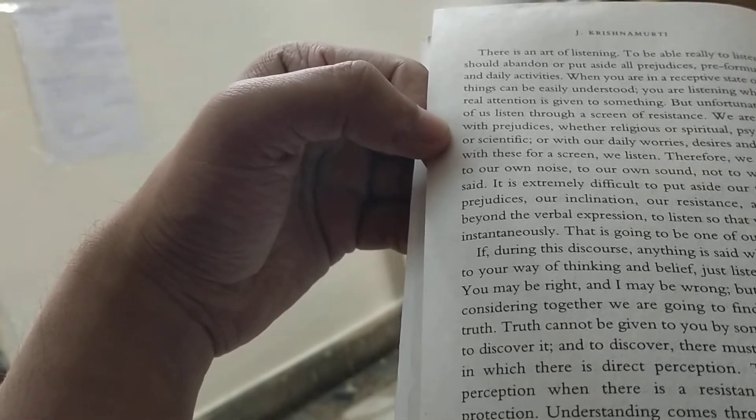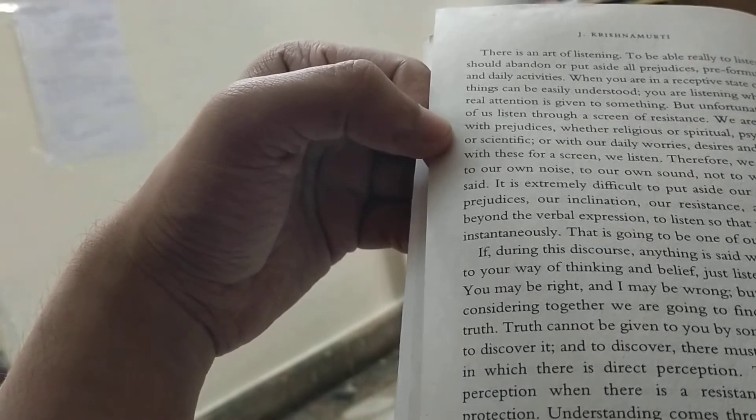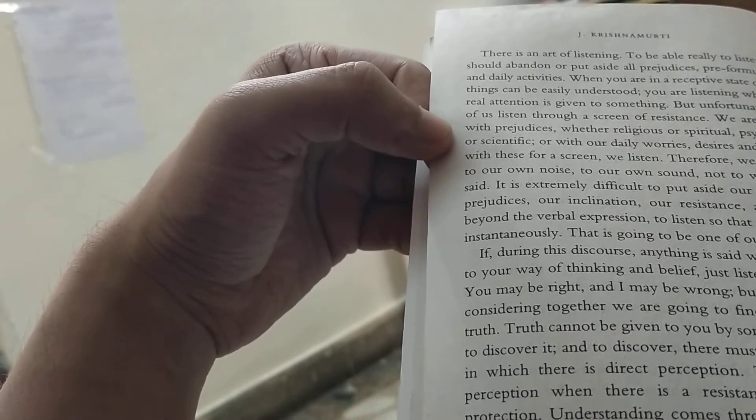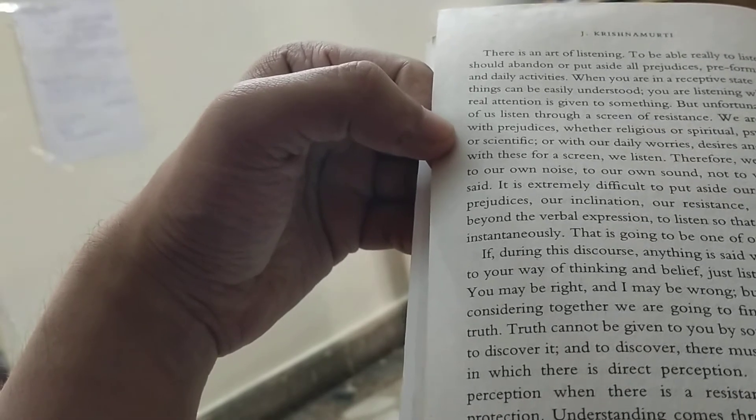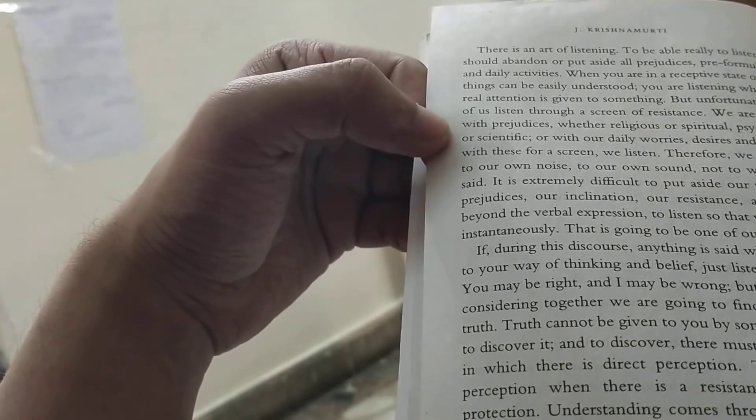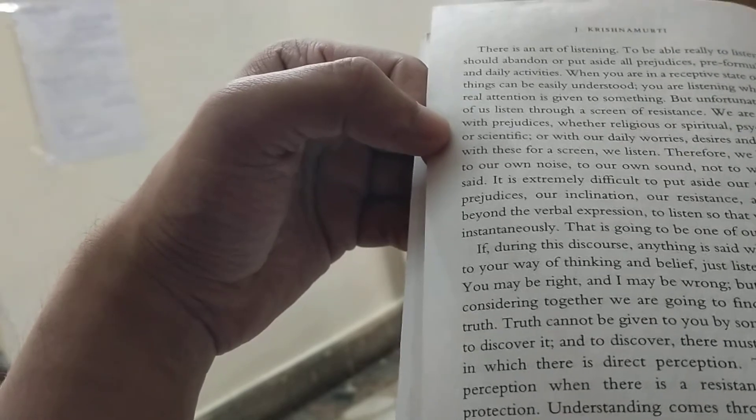But by listening and considering together, we're going to find out what is the truth. Truth cannot be given to you by somebody. You have to discover it, and to discover, there must be a state of mind in which there is direct perception. There is no direct perception when there's resistance, a safeguard, a protection.